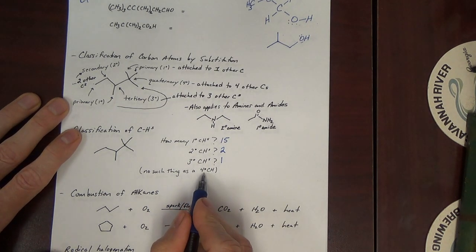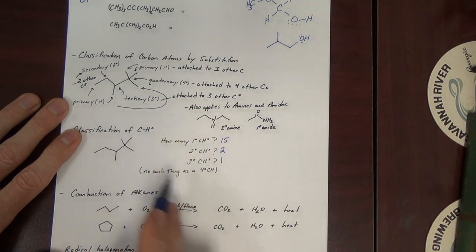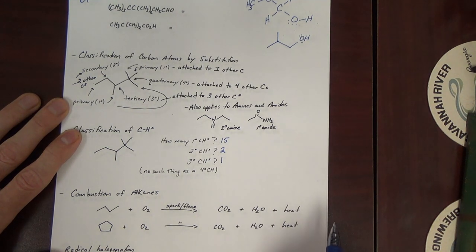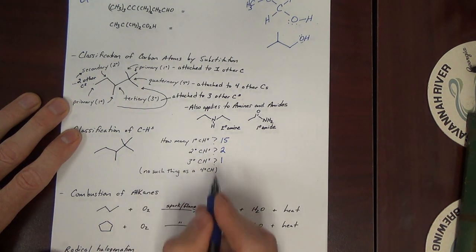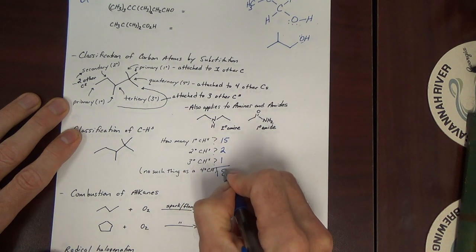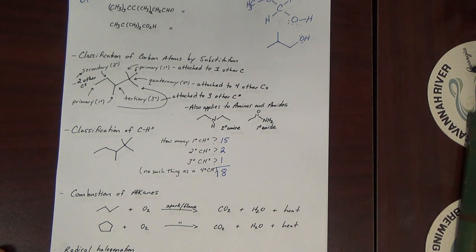How many quaternary C-H's? Well, there's no such thing because a quaternary carbon can't have an H because if that carbon is bonded to four other carbons, it cannot be bonded also to an H. No such thing. How many total H's? Well, we have them all. We classify them all. There's eighteen total. Each H.